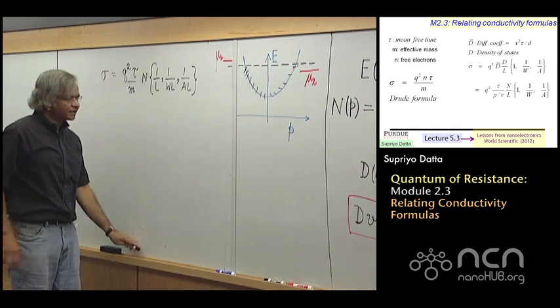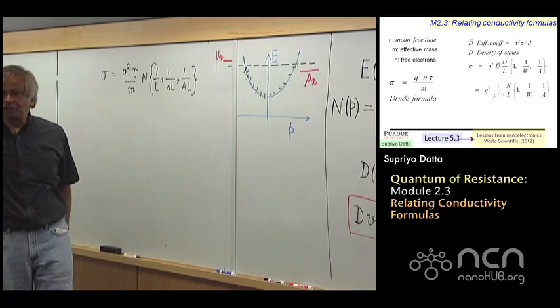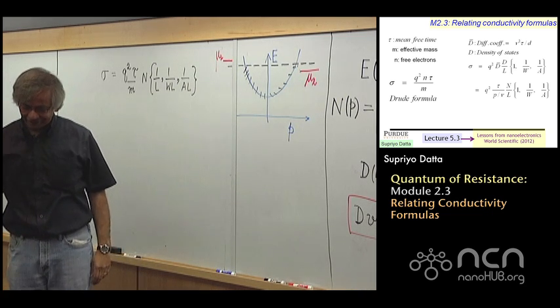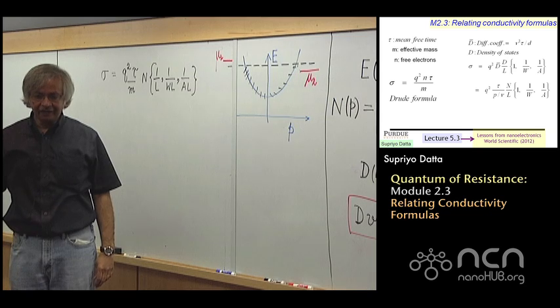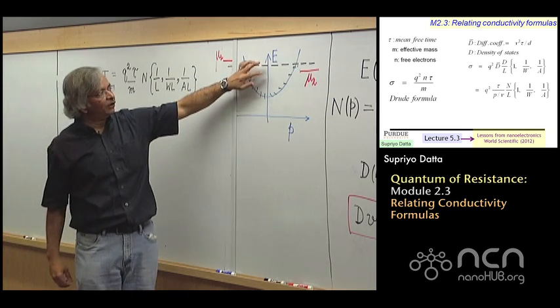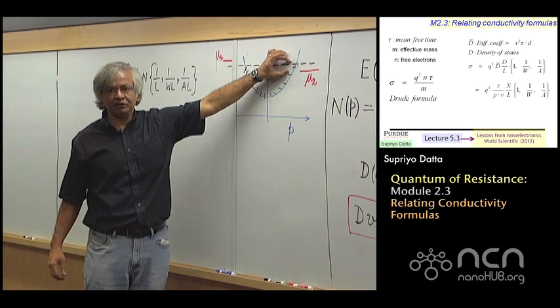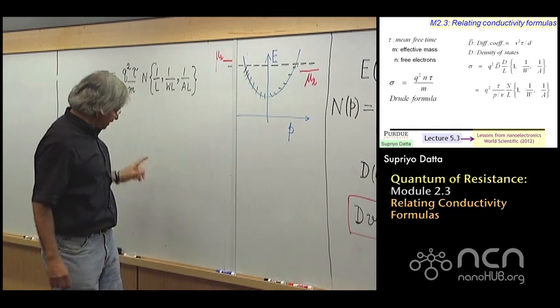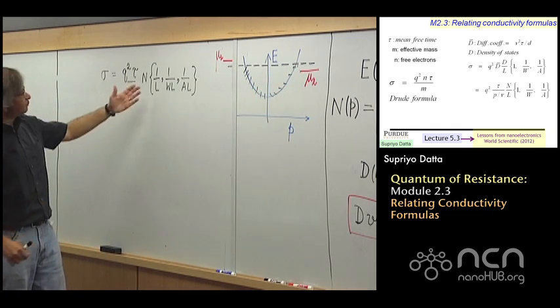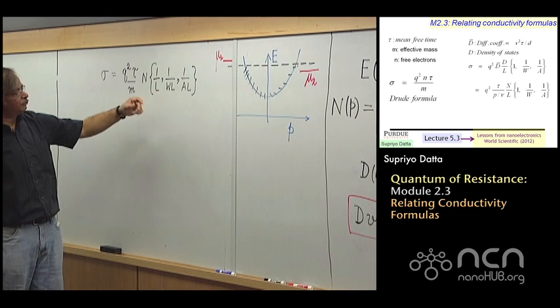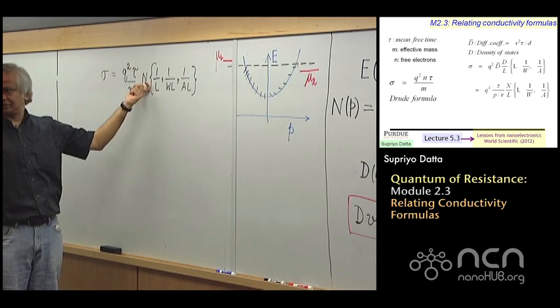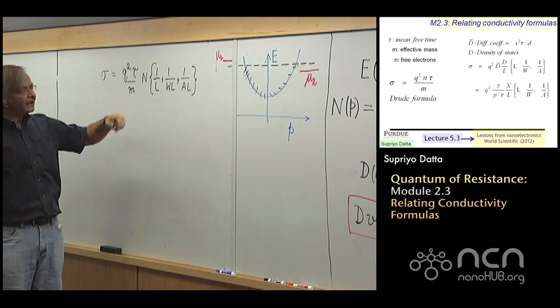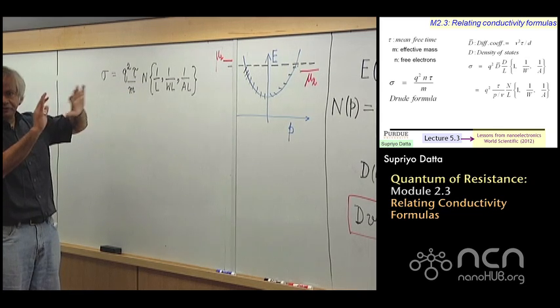Now this is a rather different view because one of the things I insisted right in the beginning is that current flow only depends on the electrons in this energy window. Things down here don't really matter. On the other hand, this approach tells you that current flow depends on the total number of electrons.